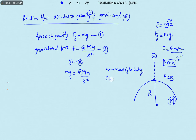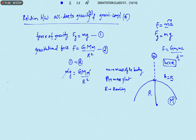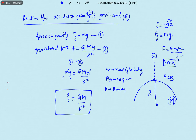Here capital G is the gravitational constant, capital M is the mass of the planet, and R is the radius of the planet. This discussion is for the general case — this phenomenon is valid for any planet. Cancelling small m from both sides, we get: small g equals G·M/R². This is the relation between acceleration due to gravity and the gravitational constant.